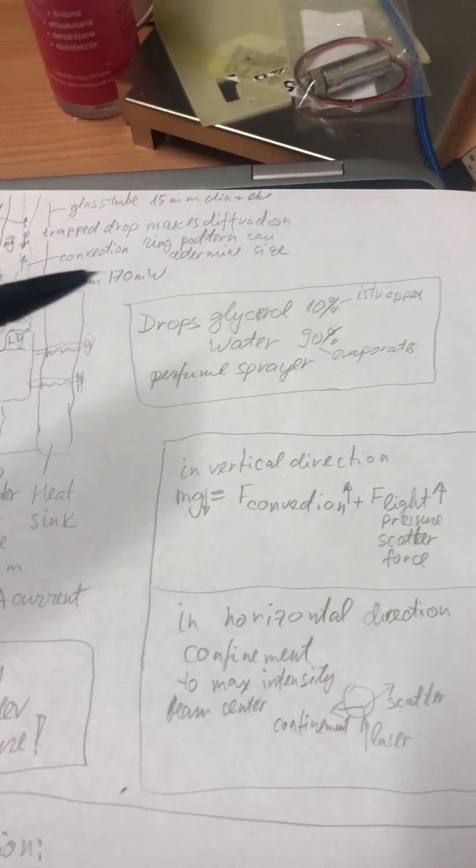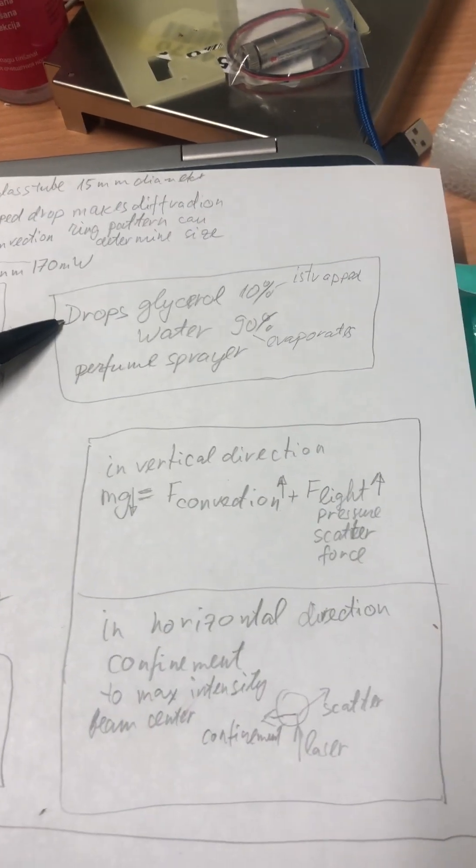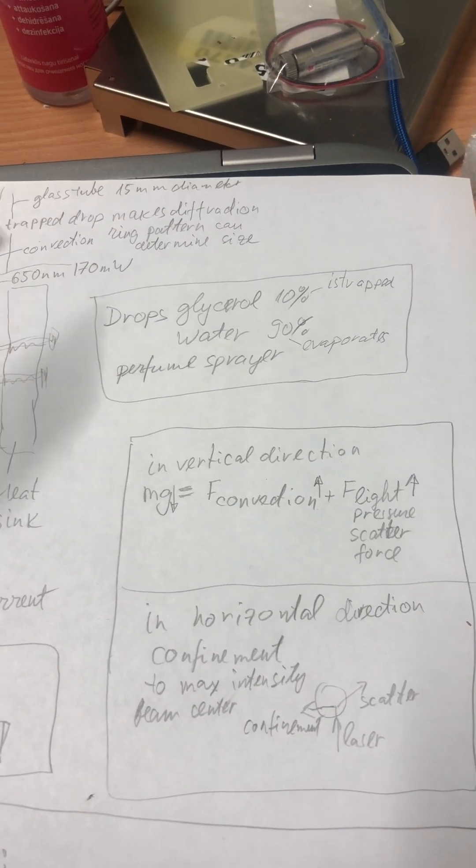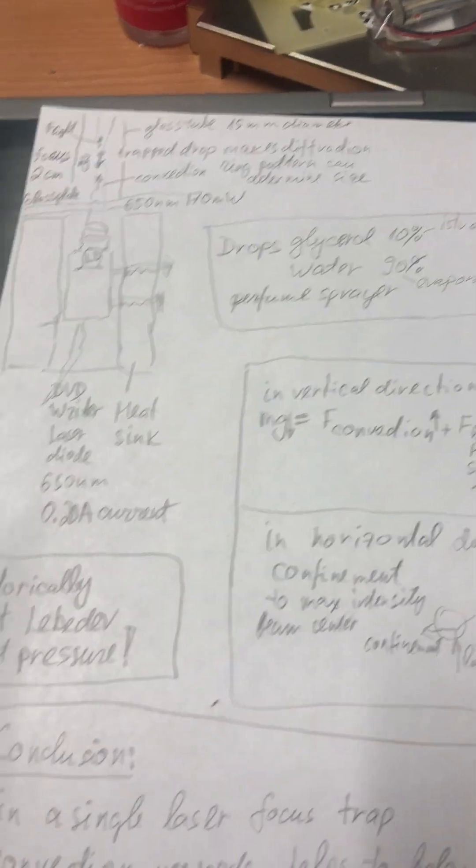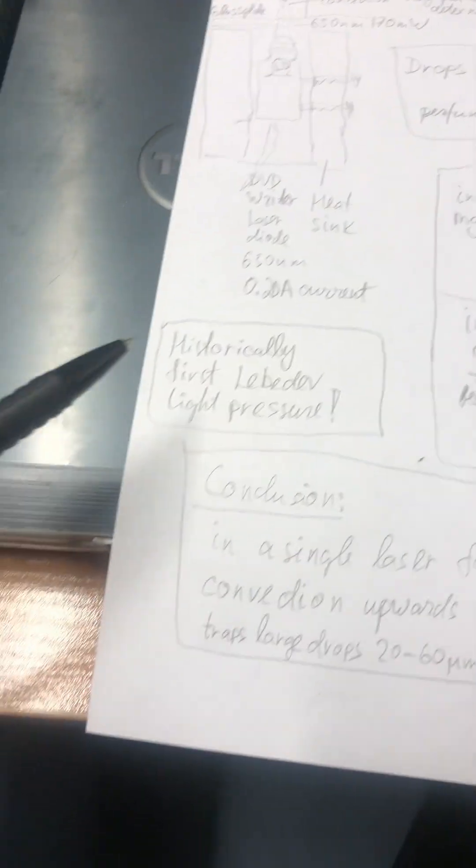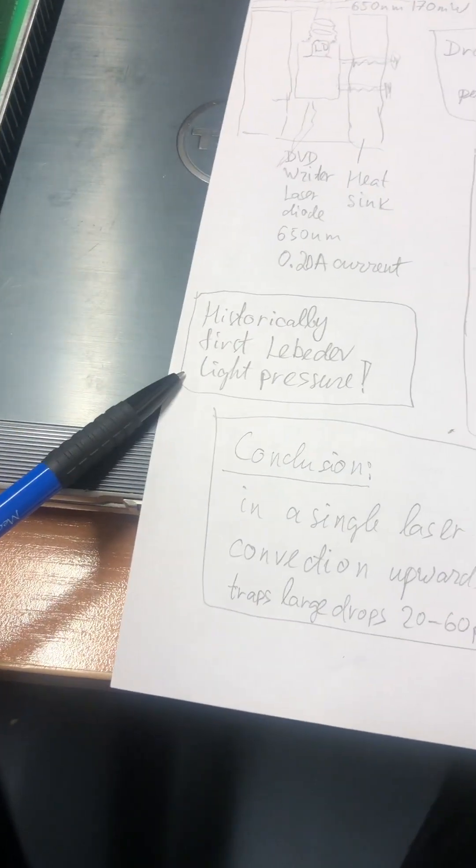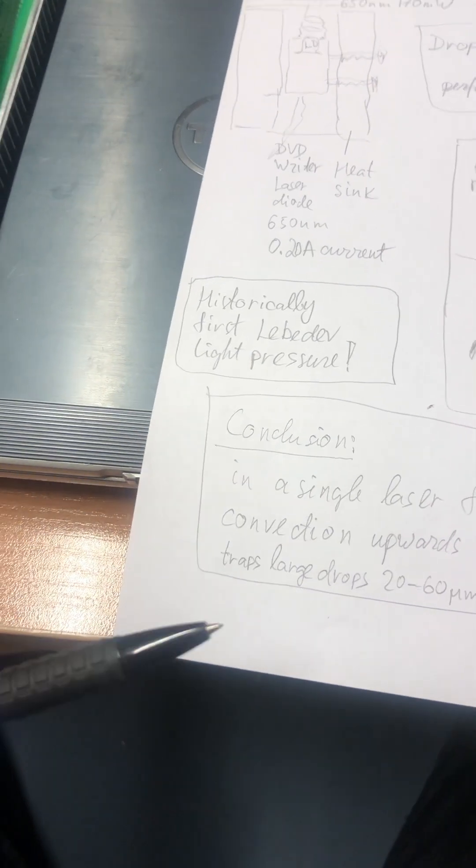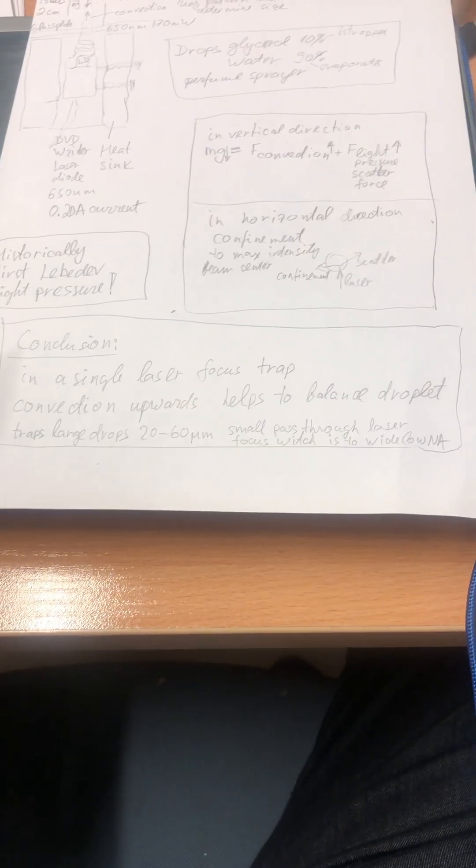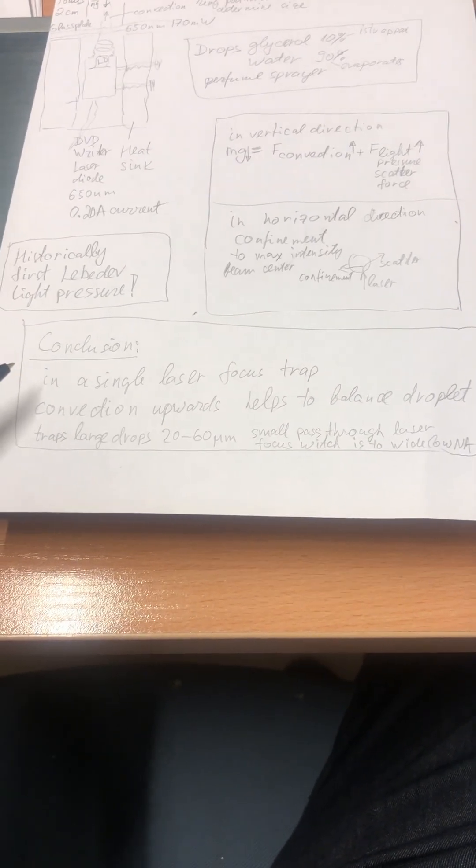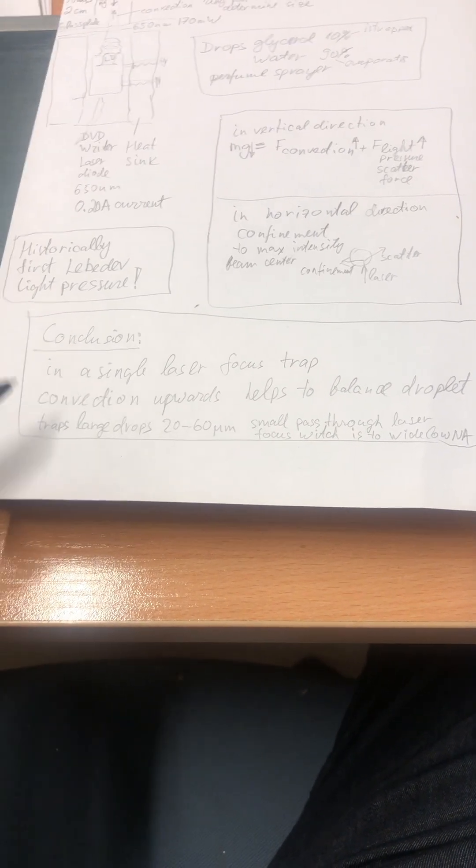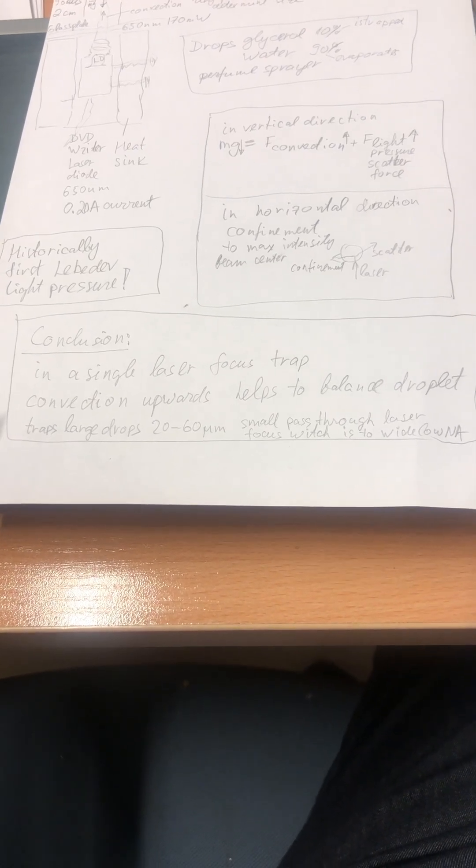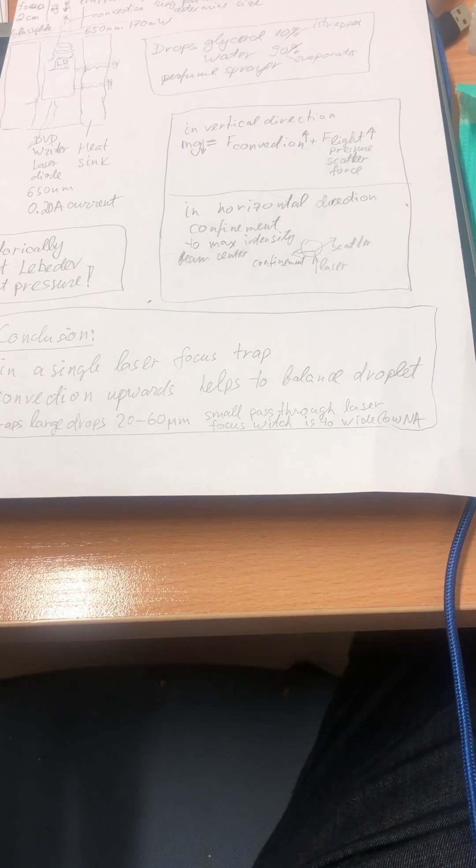The drops are 10% glycerol which does not evaporate and 90% water which evaporates. Historically, first was Lebedev who saw and measured the pressure of light. In conclusion, this is a single laser focused trap. Convection upwards helps to balance the droplet.